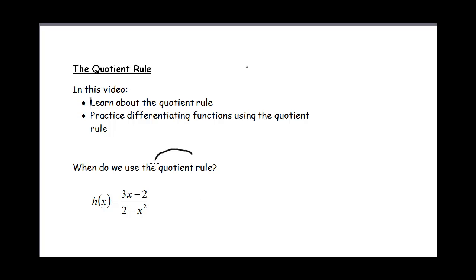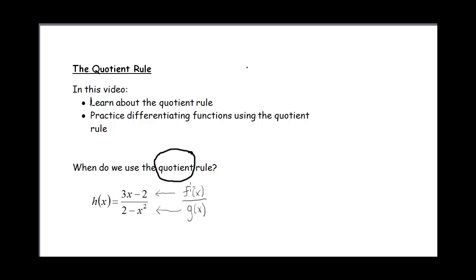When we see this word 'quotient,' that's just a fancy way of saying two functions are being divided. So we've got one function here, 3x minus 2 — this is like our f of x. And a second function, 2 minus x squared — this is like our g of x. And we're dividing these two functions, so h of x is the quotient of two functions.